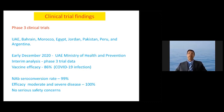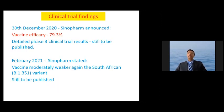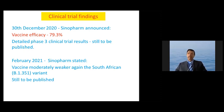The neutralizing antibody rate was 99%, and efficacy against moderate or severe disease was 100%. There were no serious safety concerns. On the 30th of December 2020, Sinopharm announced a vaccine efficacy of 79.3%, a figure cited frequently. However, the important thing to remember is that detailed Phase III clinical trial data are still to be published — we need to see that data to evaluate and make our own decisions. In February 2021, Sinopharm stated the vaccine had moderately weaker responses against the South African variant, but again, that data is still to be published.